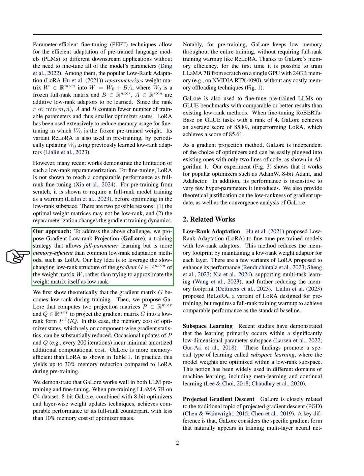To address these challenges, we introduce Gradient Low-Rank Projection, GaLore, a training strategy that is more memory-efficient than traditional low-rank adaptation methods like LoRA. GaLore leverages the slow-changing low-rank structure of the gradient matrix of the weight matrix during training. By projecting the gradient matrix into a low-rank form, GaLore significantly reduces the memory cost of optimizer states.